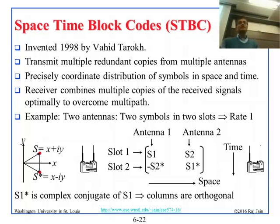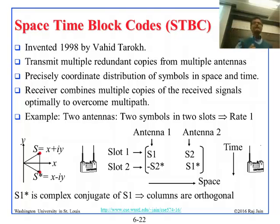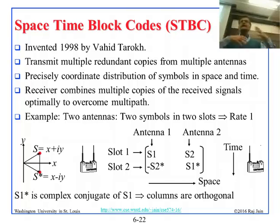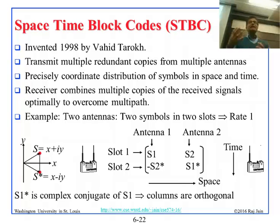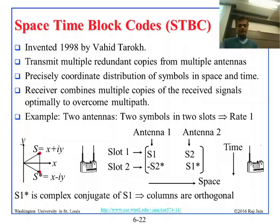It is not limited to 2 by 2. You could have any M by N — any number of time slots and any number of antennas. We will not go into those details, but it's like MIMO: you can have any number of antennas transmitting and receiving, and there is a map behind it that says how you make the best use of those antennas. You are given time and antennas and you make the best use of it. This is 2 by 2 STBC.